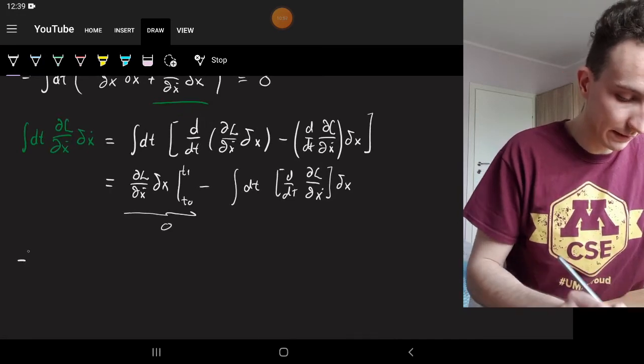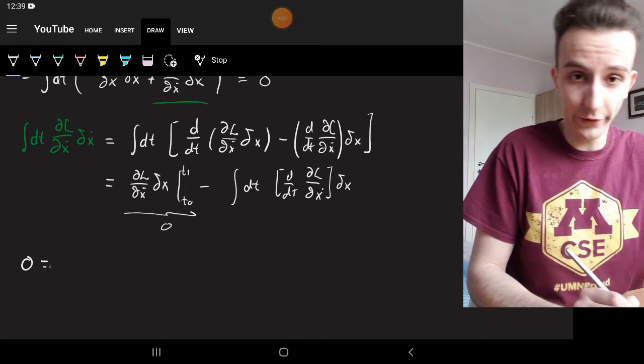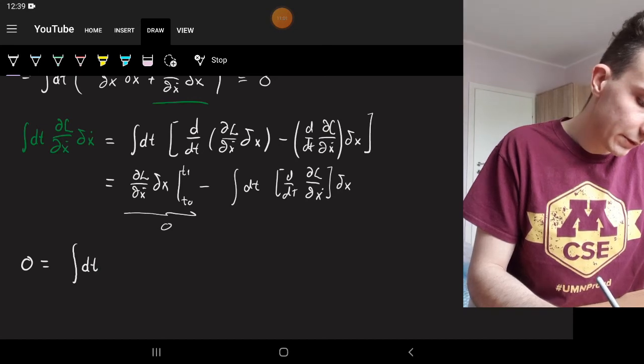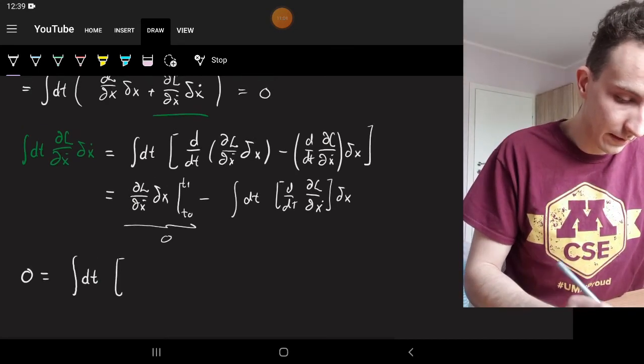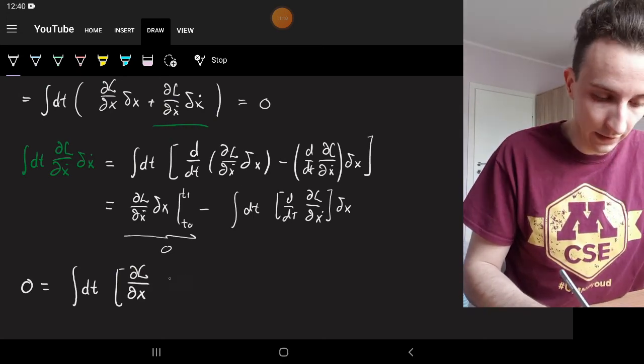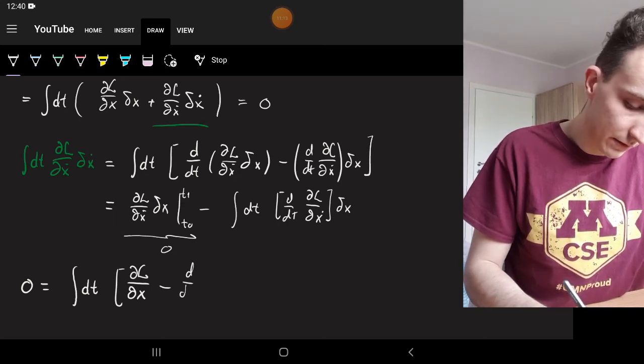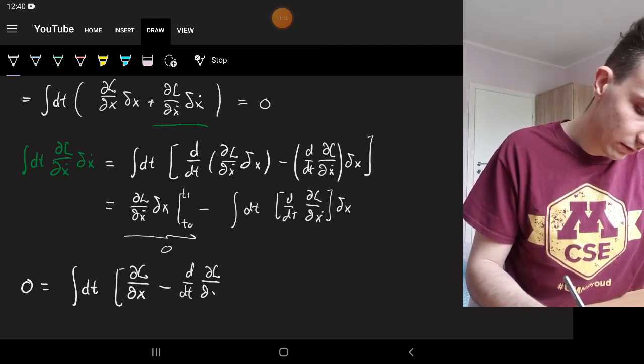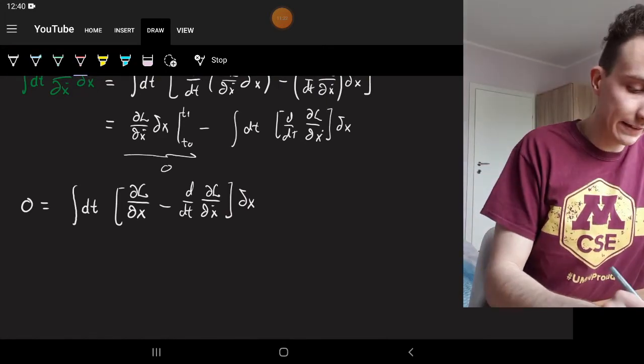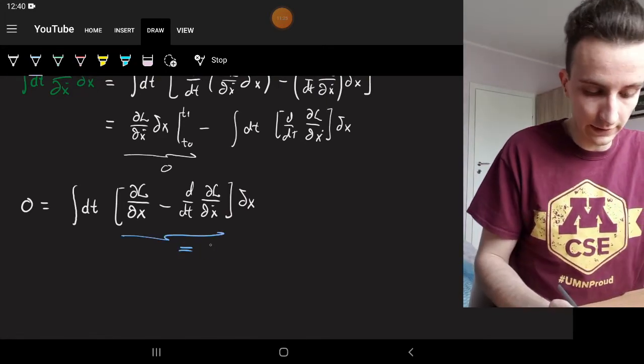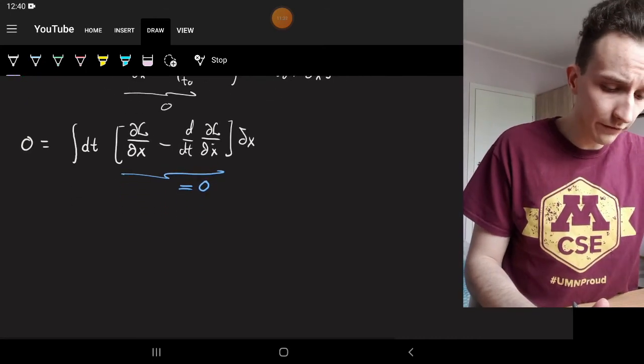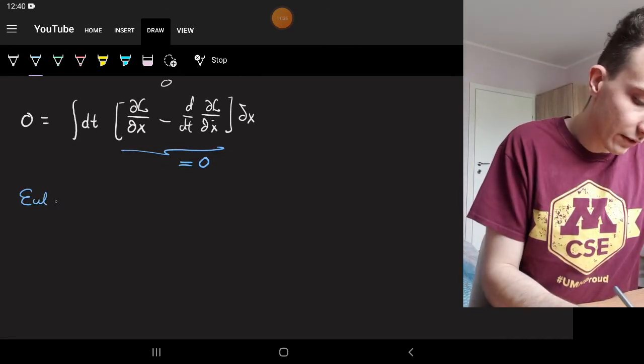Now we've got everything with respect to delta x. So we have 0, which is the variation of s, is equal to the integral dt. We copy the first term, so that's partial L partial x. I'm going to put delta x in front, and then minus d by dt partial L partial x dot, and then I have delta x. And now we can set this equal to 0, because it's the only way that this integral is always 0 regardless of delta x. So if that's equal to 0, then we get the Euler-Lagrange equation.